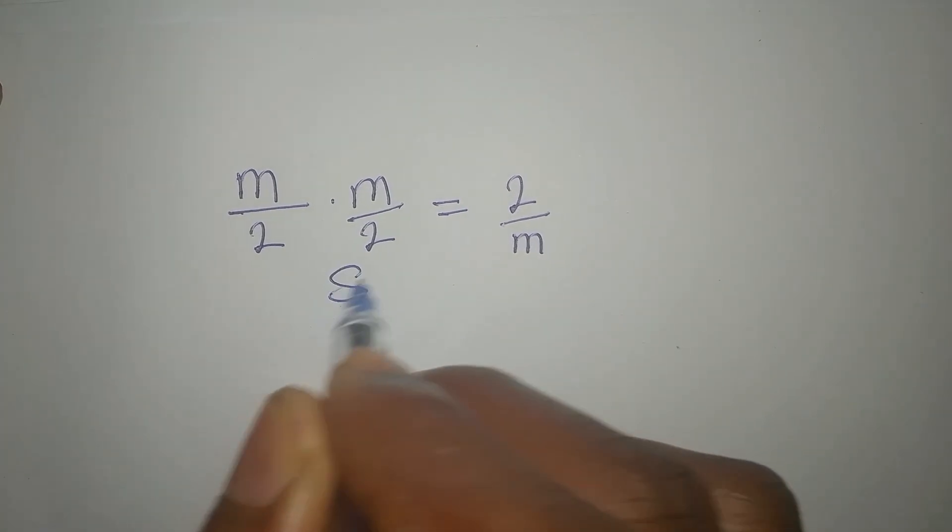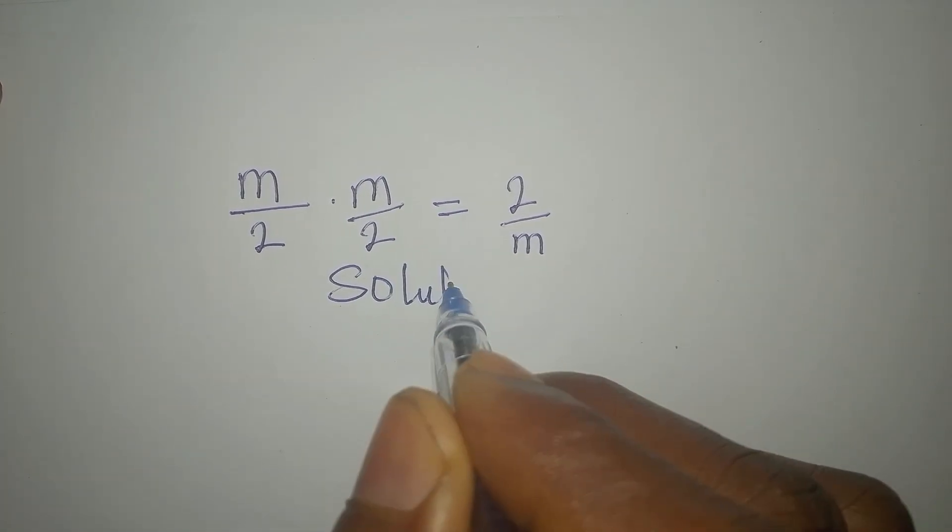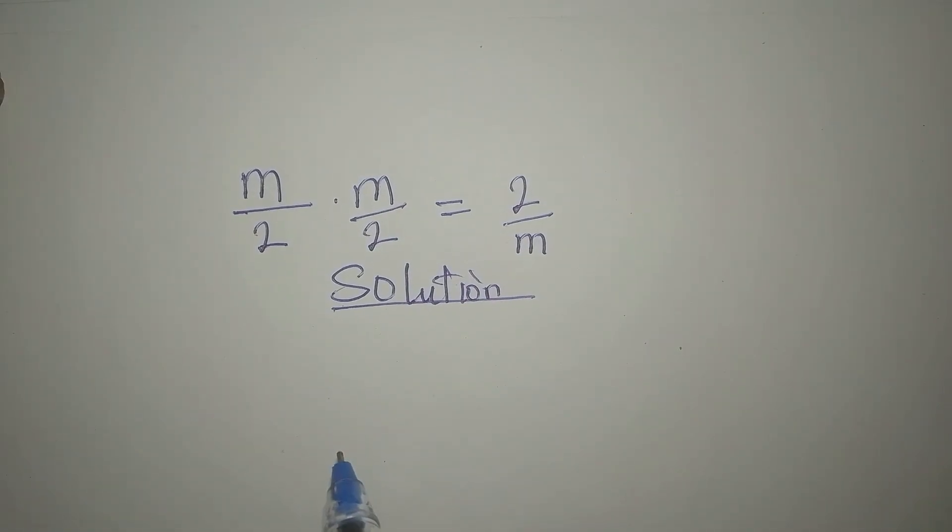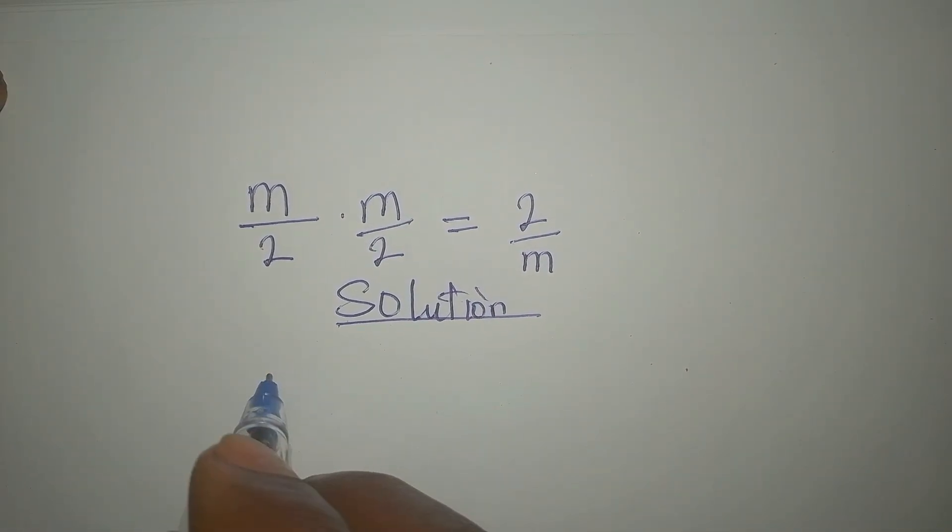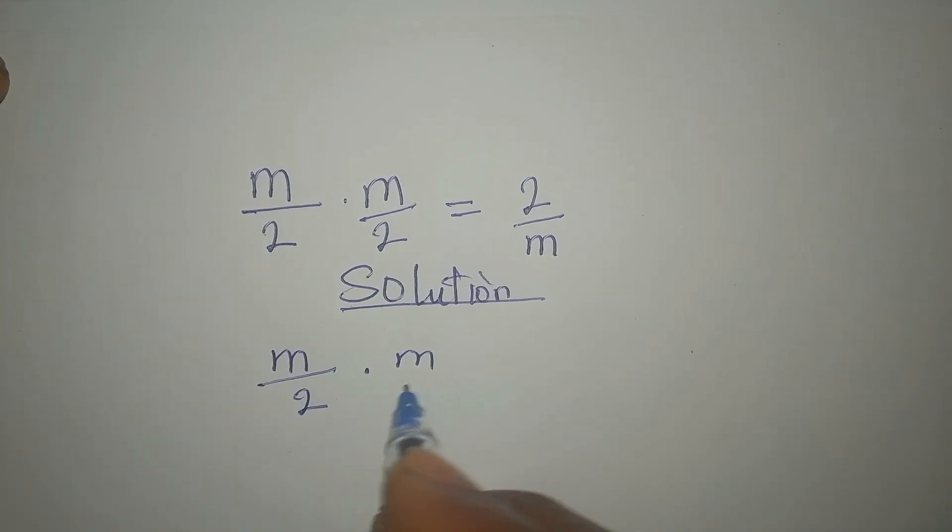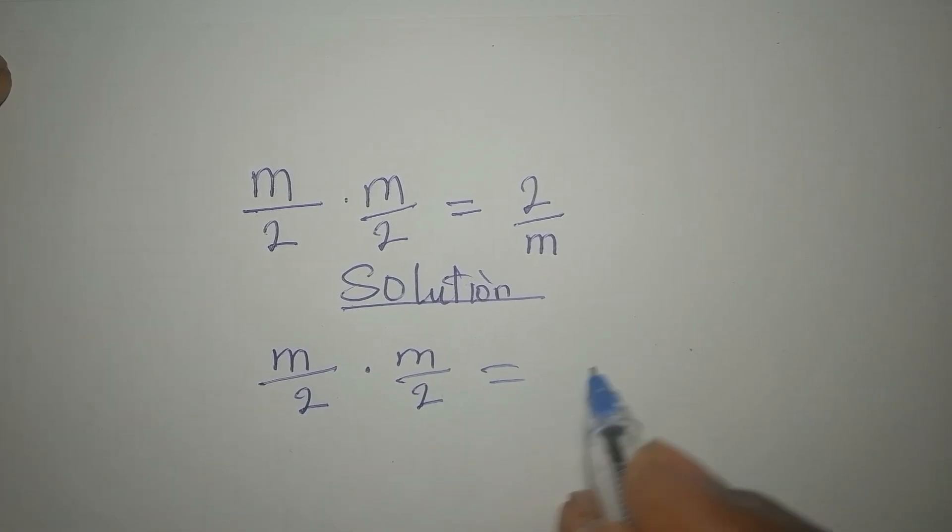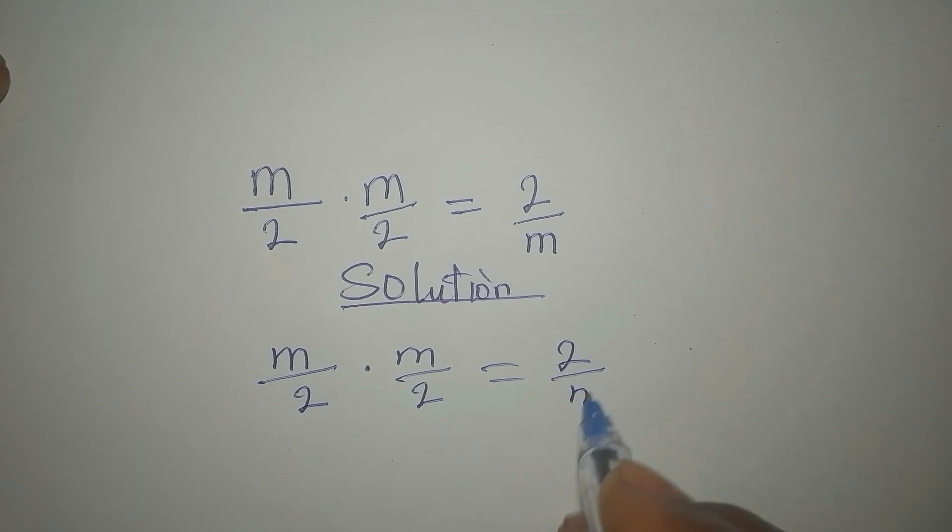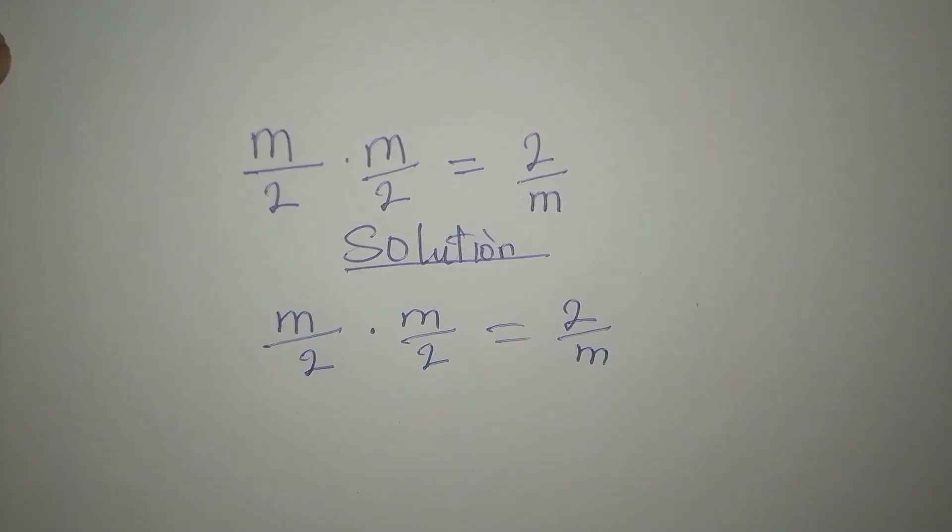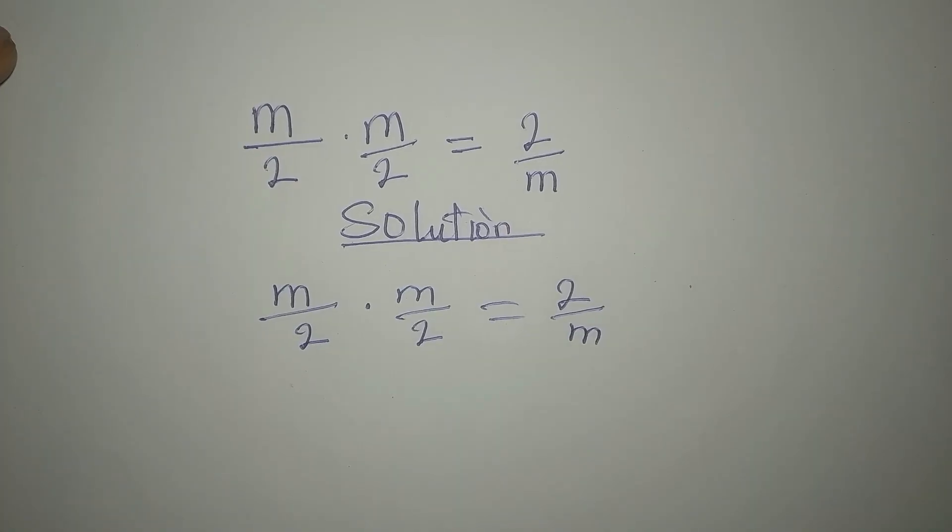Hello everyone. Let's provide the solution to this problem. m over 2 times m over 2 equals 2 over m. We have to provide the complete solution to this problem.